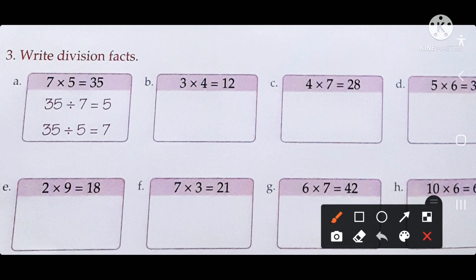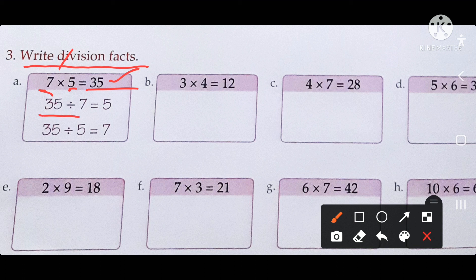The next question asks you to write division facts. The first number is 7 and the second number is 5, and their product is 35. So 35 divided by 7 gives quotient 5, and 35 divided by 5 gives quotient 7.